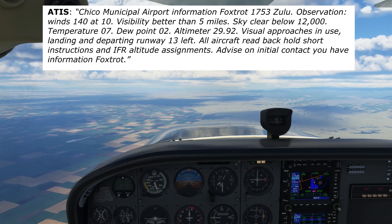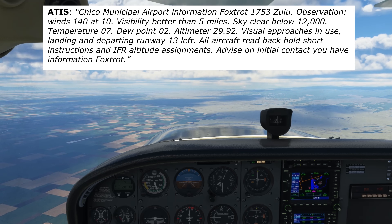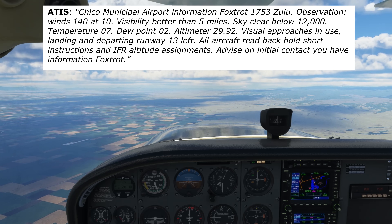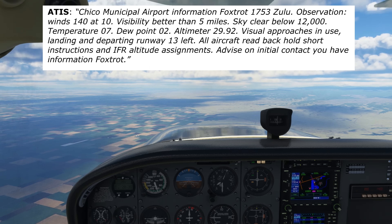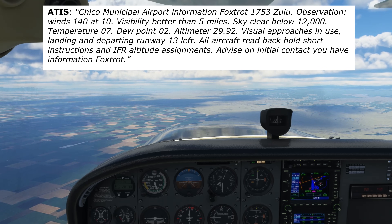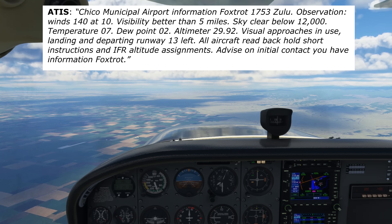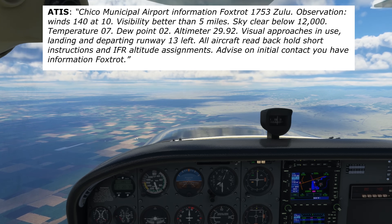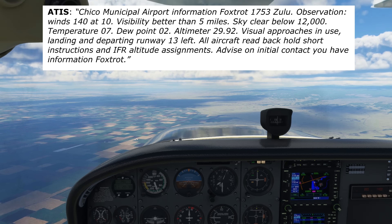Chico Municipal Airport, Information Foxtrot, 1753 Zulu Observation. Winds 140 at 10. Visibility better than 5 miles. Sky clear below 12,000. Temperature 07. Dewpoint 02. Altimeter 2992. Visual approaches in use, landing and departing runway 13L. All aircraft read back hold short instructions and IFR altitude assignments. Advise on initial contact. You have Information Foxtrot.